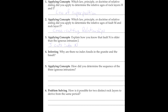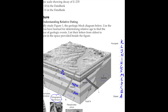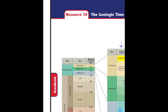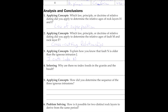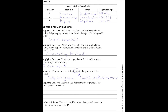Why are there no index fossils in the granite and the basalt? Think about what granite and basalt are — those are both igneous rocks. You're not going to have a fossil in a rock that was made from molten material. Fossils are found in sedimentary rocks. Those are igneous rocks.